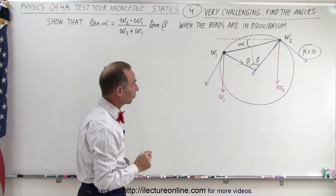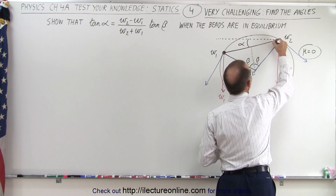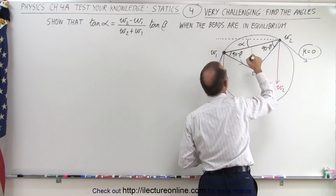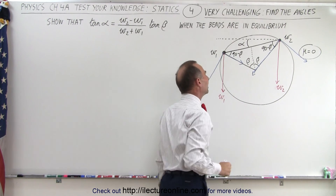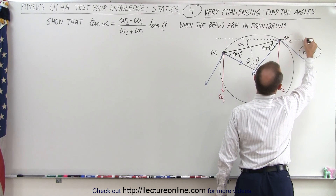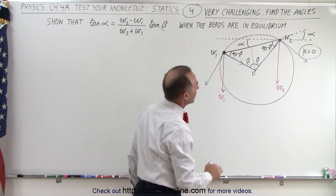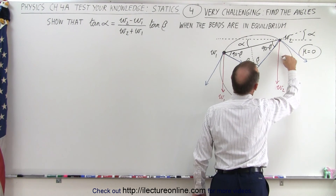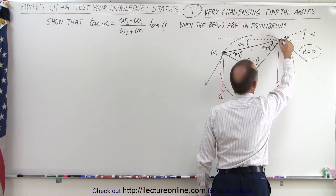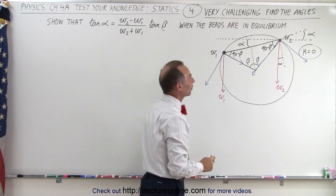Now we need to define those two vectors, which means we need to define the angles. So here we can say that this angle here by necessity must be 90 minus beta. And this angle here must also be 90 minus beta, because 90 plus this plus this will give us 180 degrees. If I draw a line this way and a line this way, I can see that this angle here must be alpha. Now, if I draw a line parallel to this, that angle must also be alpha.